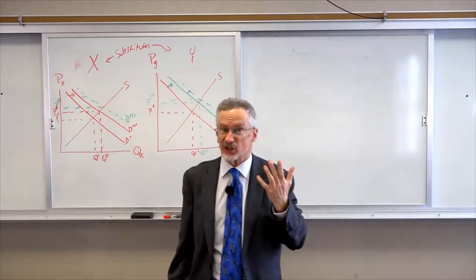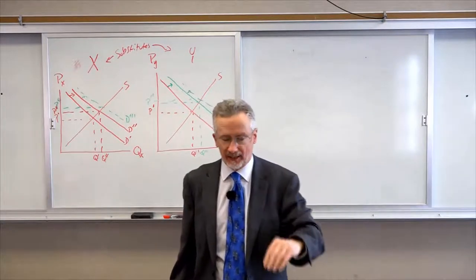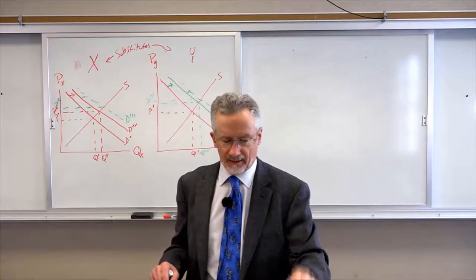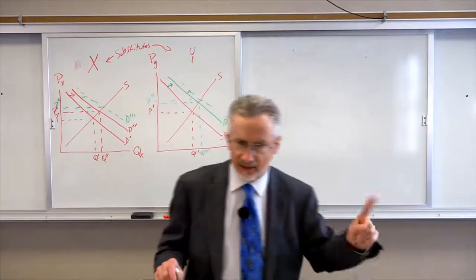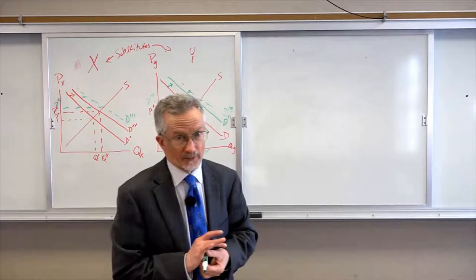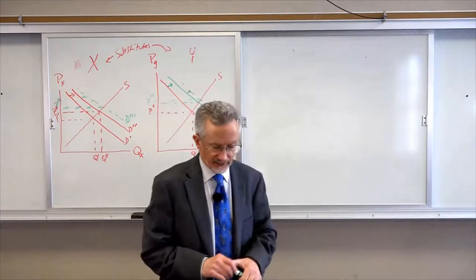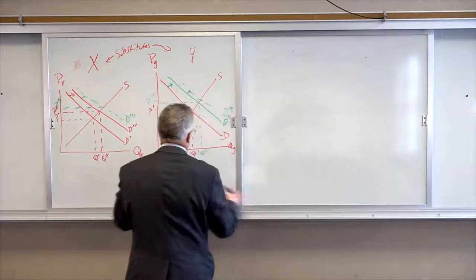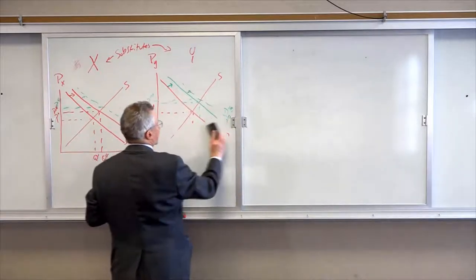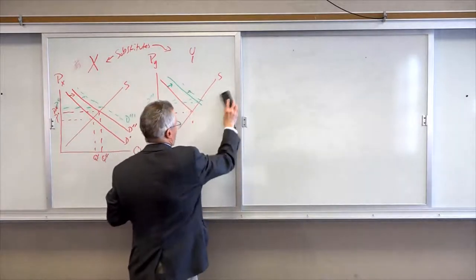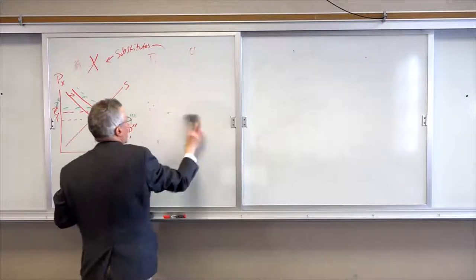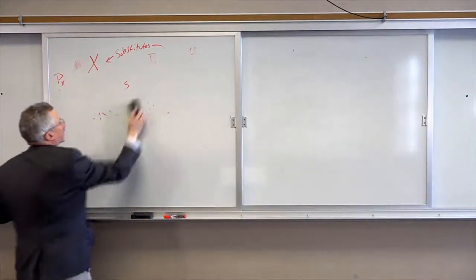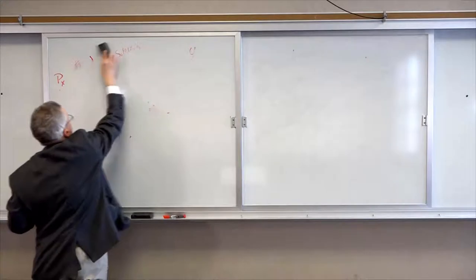Walras's argument is that Marshall has missed the interconnectedness of markets, and that's got to be a fundamental feature of our theory. So he develops what is called general equilibrium theory, and that's the hallmark of the School of Lausanne. Let's tell the story of Leon Walras. This is a little bit more dense than some of the other material we've gone through.